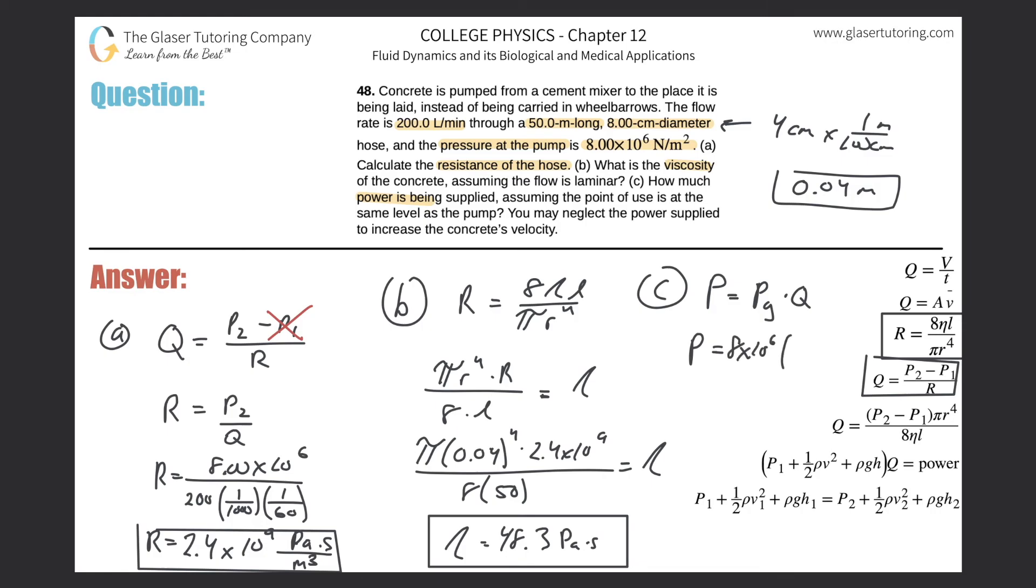But remember, the flow rate we got to have it in terms of cubic meters per second. We already did that conversion over here, right? So it's really 200 over 60,000, just combining the denominator values here. And then we can find the power.